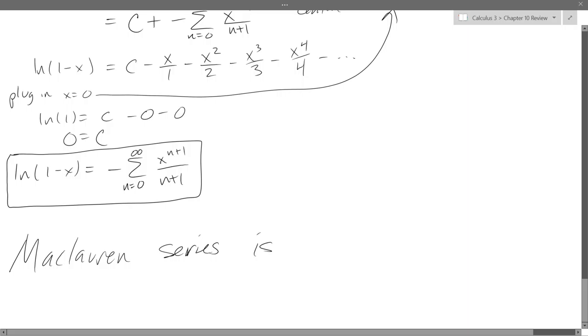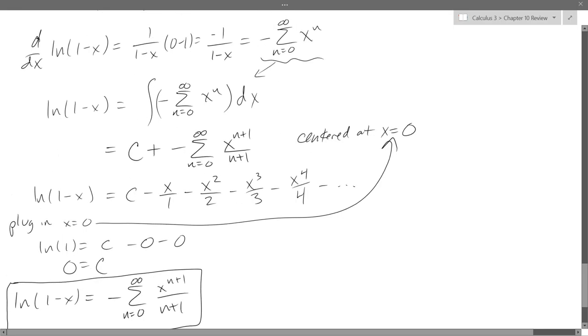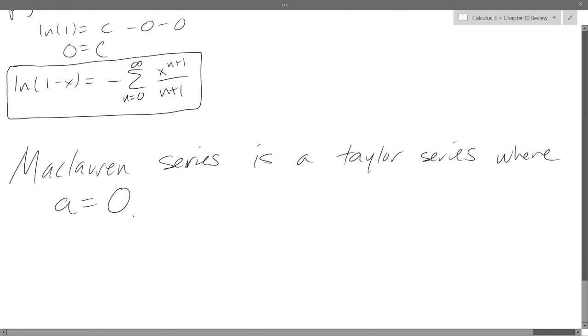So I briefly talked about Maclaurin series and I'll just write down the difference. Maclaurin series is a Taylor series where a is zero. So we're technically doing Maclaurin series on this natural log problem because it was centered at zero. So you're going to find a lot of the problems that are going to be centered at zero and specifically that is called a Maclaurin series. So that's going to be the end of chapter 10.